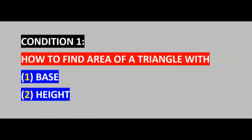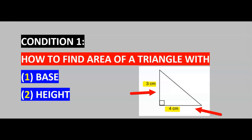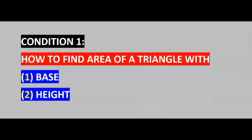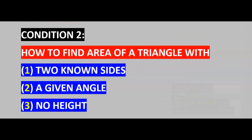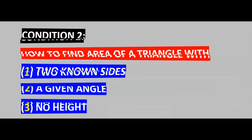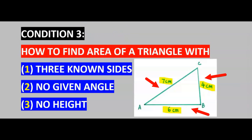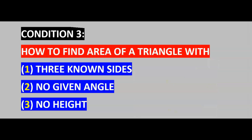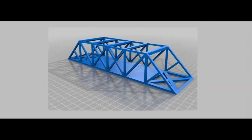The first condition is when a triangle has a given base and height. The second condition is when a triangle has two known sides, a given angle, but no height. The third condition is when a triangle has three known sides, no given angle, and no height. The formula for calculating each given condition is different. Let's start with condition 1.